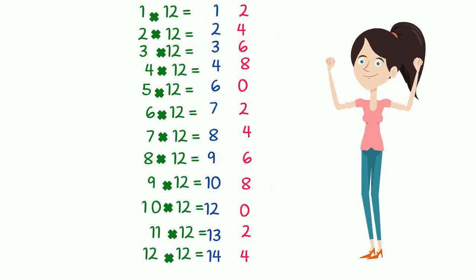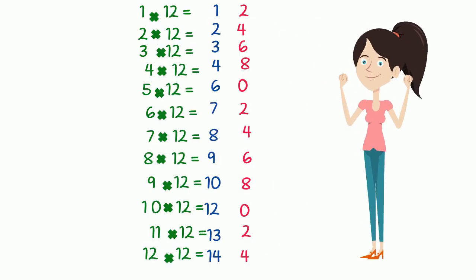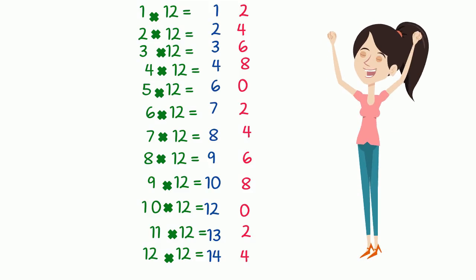So we have 1 times 12 equals 12, 2 times 12 equals 24, 3 times 12 equals 36, 4 times 12 equals 48, and that goes on all the way down.